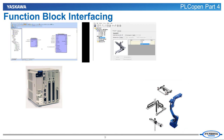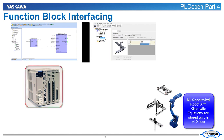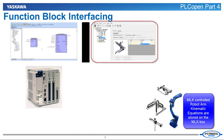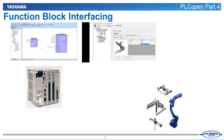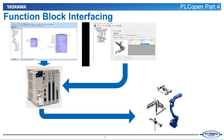The programmer does not need to know the kinematic equations of the machine to program a move, because these equations are already created and are in the controller firmware. When the group is created in the hardware configuration, the required kinematic equations are defined behind the scenes for that group. So the function blocks just have to give overall commands to the group and the controller firmware will handle the rest.